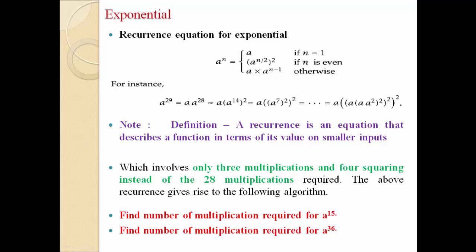This is the recurrence equation for exponential a raised to n. Just take one example: suppose n is equal to 29, so a raised to 29. As per the classic algorithm, a into a into a into a for 29 numbers of a — how many multiplications are required? n minus 1, that means 28 number of multiplications are required to perform a raised to 29.